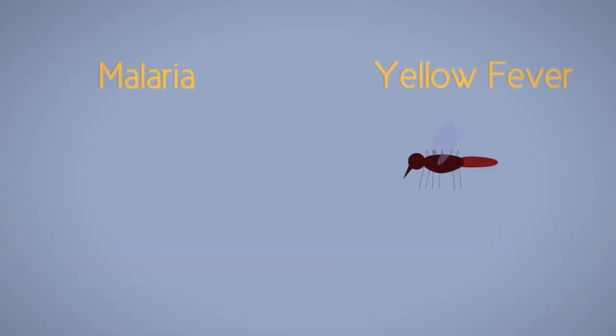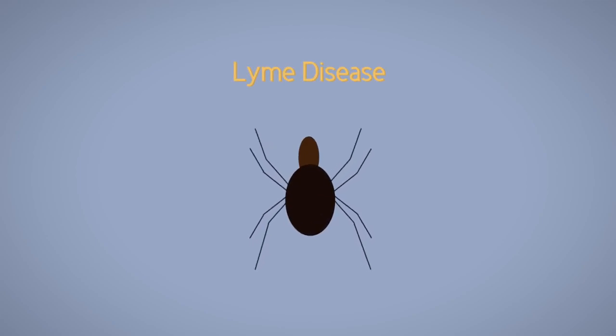Malaria and yellow fever both have mosquitoes as a vector, and Lyme disease uses ticks. A vector is an organism that has an active role in transmitting pathogens from one host to another.